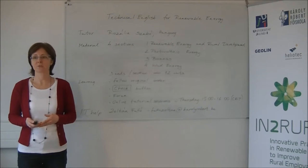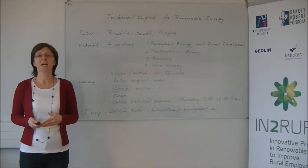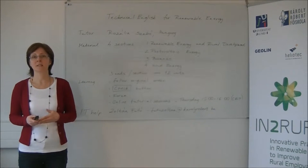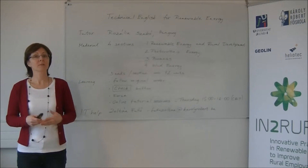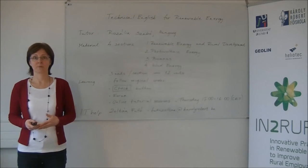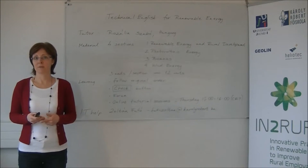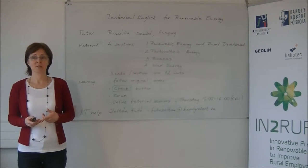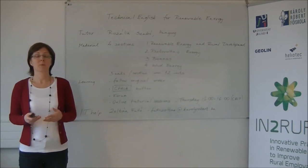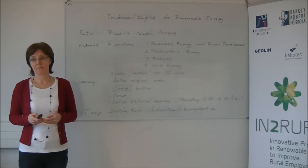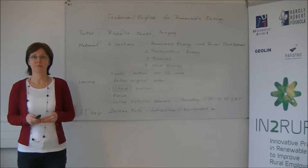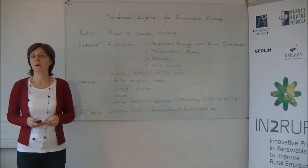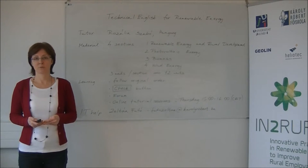The Technical English course starts on the 1st of February and finishes on the 29th. The material is divided into four sections following the topics of the second online course: the first one is Renewable Energy and Rural Development, the second one is Photovoltaic Energy, the third one is Biomass, while the fourth one is Wind Energy. Each section contains three units, so there are twelve units altogether, which you can learn in about twelve hours.